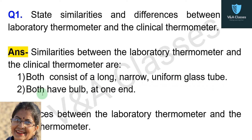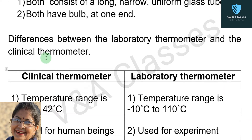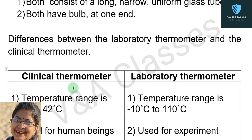Second point, both have a bulb at one end. Now, differences between the laboratory thermometer and the clinical thermometer. For differences, you have to draw two columns. In the first column write all the points for the clinical thermometer, and in the second column write all the points for the laboratory thermometer.